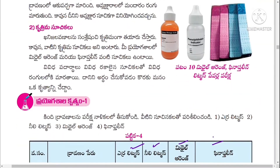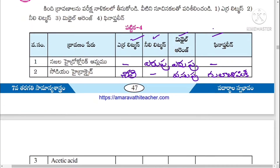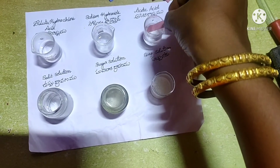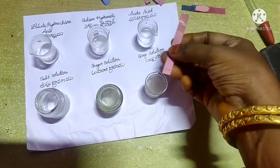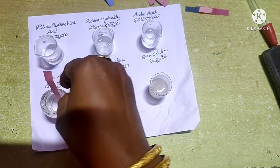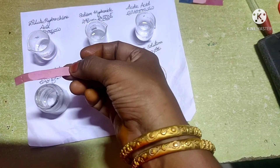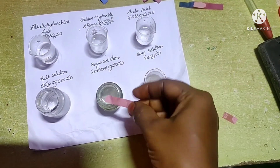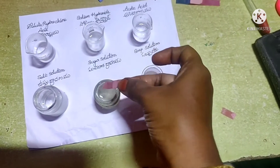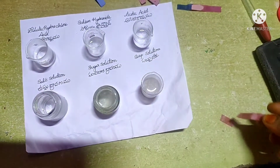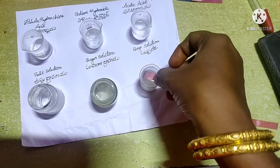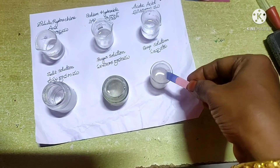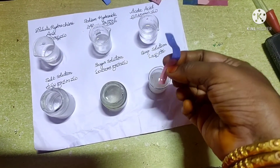Take red litmus paper and insert it in acetic acid solution and observe the color — there is no change. Dip red litmus paper into the salt solution — there is no change. Dip into the sugar solution — there is no change. With the soap solution, it will turn blue. So whenever the red litmus turns blue, that solution indicates a base solution.